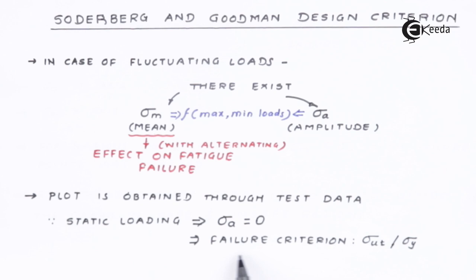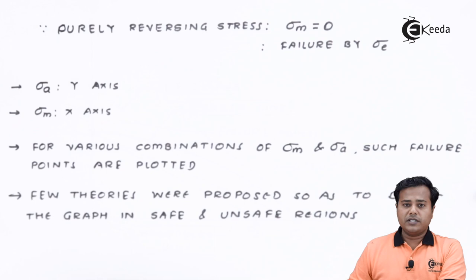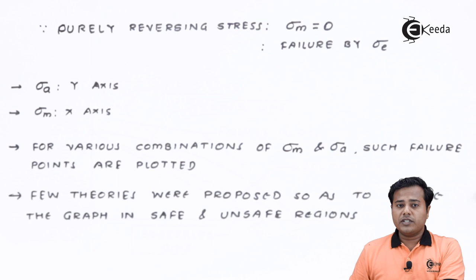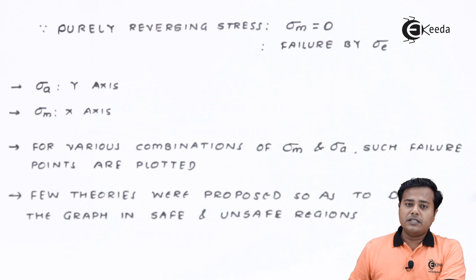The second thing is, when it is purely reversing stress — stresses are reversing in nature, maybe tensile and compressive, in a sinusoidal stress cycle — in that case the mean stress will be equal to zero. Failure criteria will then be purely based on the endurance limit, that is sigma_e, or the corrected endurance limit, represented as sigma_e dash.